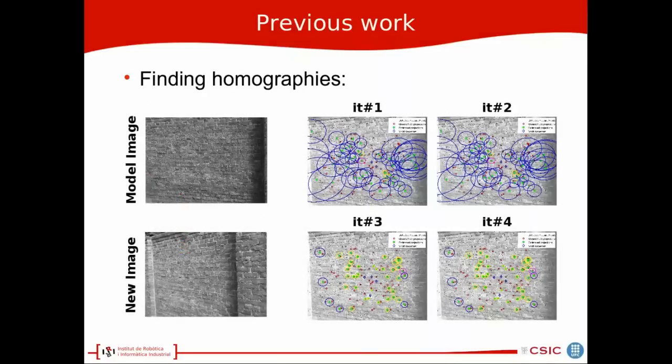To illustrate that, we have the model image and the new image, and we projected the keypoints from the model image to the new image, and we selected one match. Using this match, we update the homography prior, and we progressively refine the mean and covariance of this homography prior, until at the end we find a final good alignment of the two images.